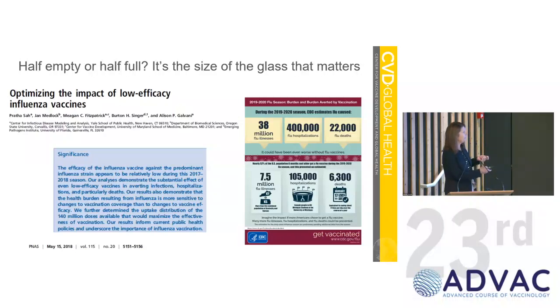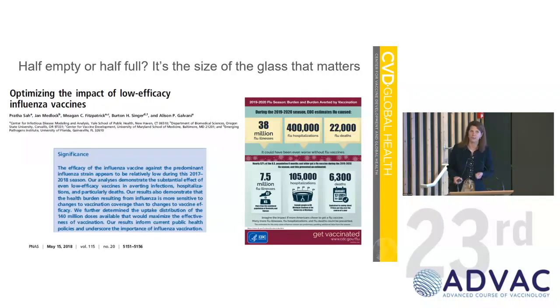Umesh asked: is the glass half empty or half full with these moderate vaccines? To me, the question should really be: what's the size of the glass? It's your burden that matters. Even what some call low efficacy flu vaccines can have significant public health impact because the disease is so common. The calculations for burden averted by vaccination show 38 million flu illnesses, 400,000 hospitalizations, 22,000 deaths prevented. We absolutely want better influenza vaccines, but what we're doing with the current ones isn't so bad.